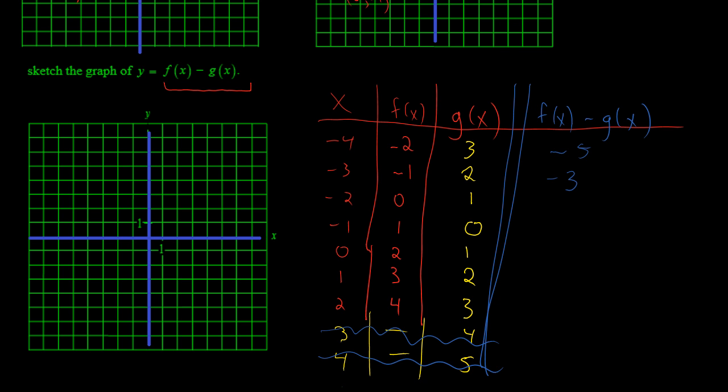This will be negative 3. 0 subtract 1 is negative 1. 1 subtract 0 is 1. 2 subtract 1 is 1. 3 subtract 2 is 1. That's interesting. And 4 subtract 3 is 1. So we've got some kind of leveling graph here.